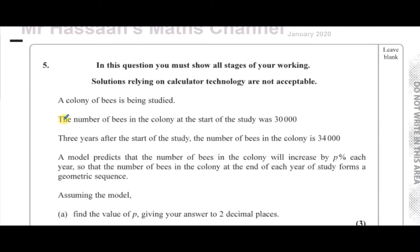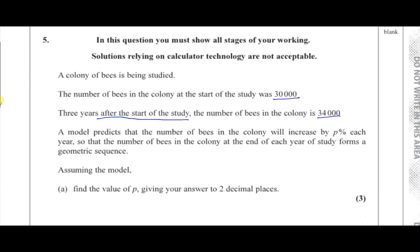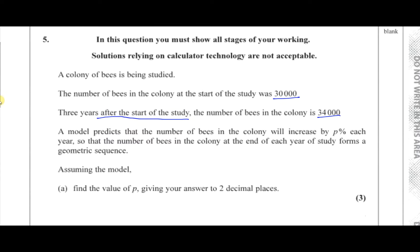The number of bees in the colony at the start of the study was 30,000. Three years after the start of the study, the number of bees in the colony is 34,000. A model predicts that the number of bees in the colony will increase by P% each year, so that the number of bees at the end of each year forms a geometric sequence.